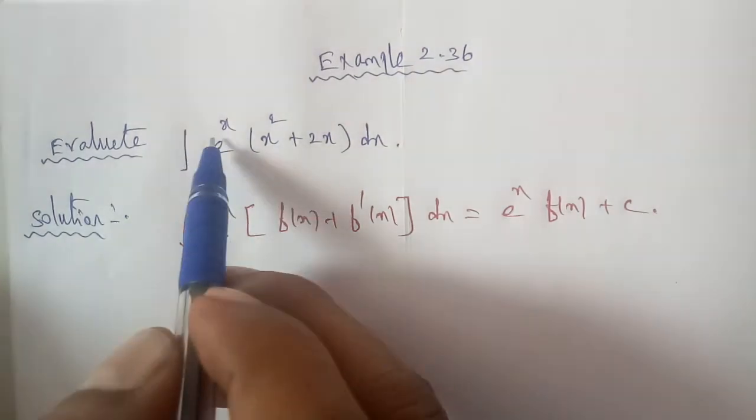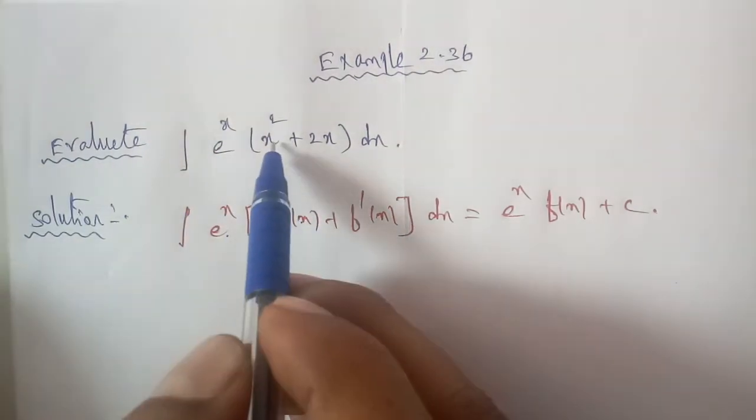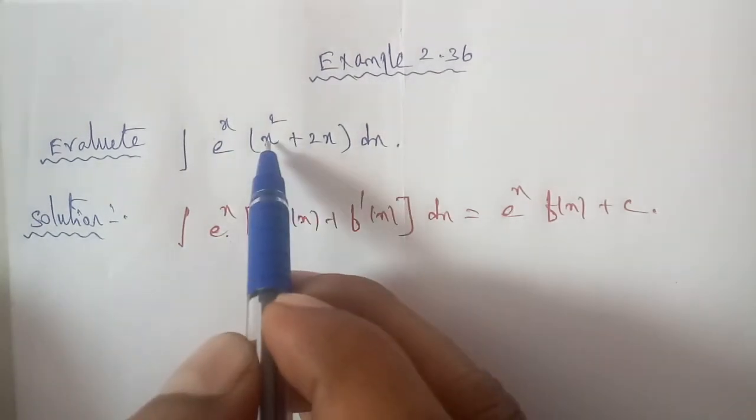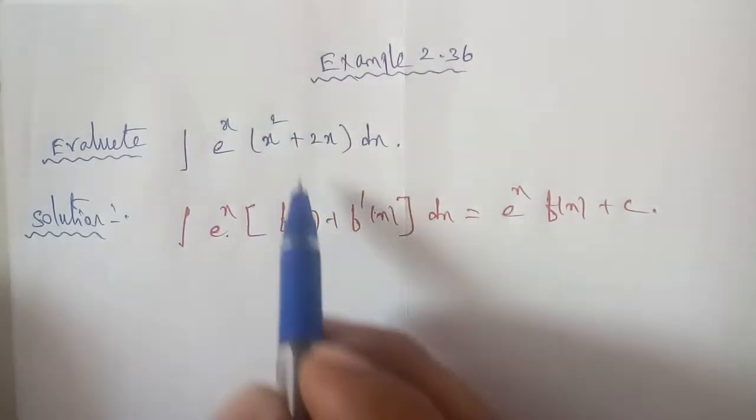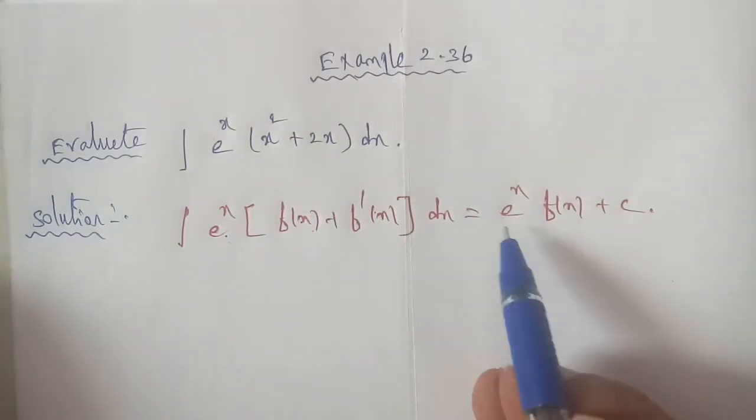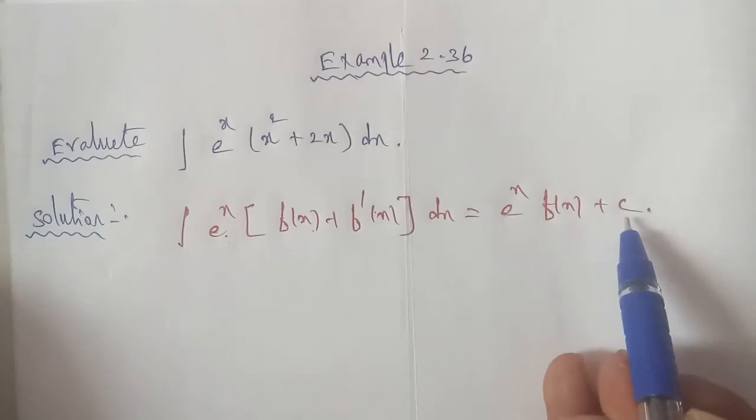In the formula, e power of x matches. Let f of x be x square. If we differentiate f of x, which is x squared, we get 2x. So the formula matches perfectly. Therefore, we can directly use the result.